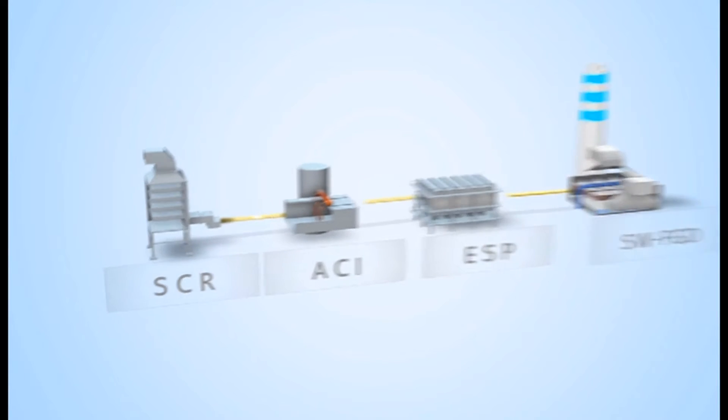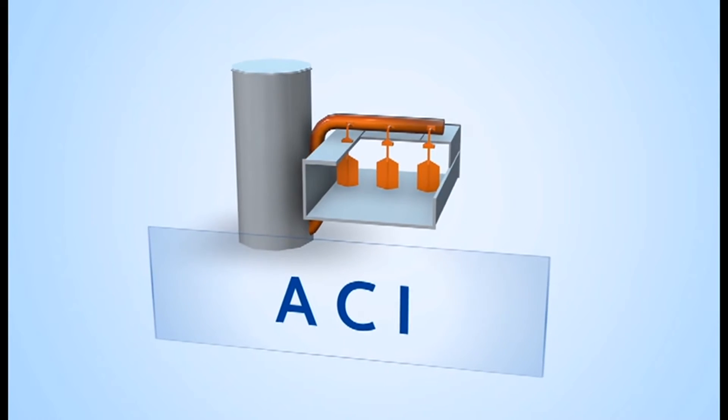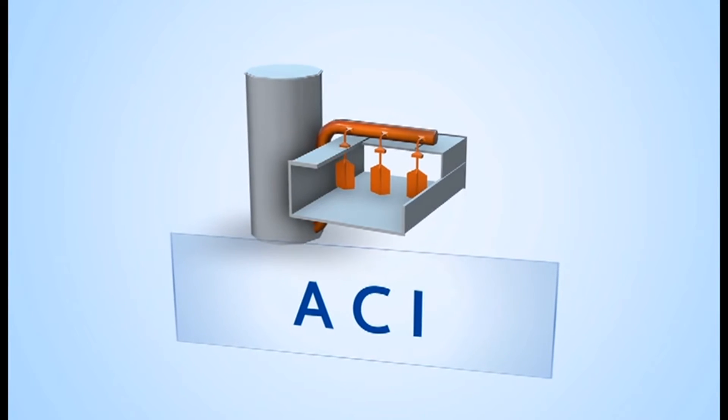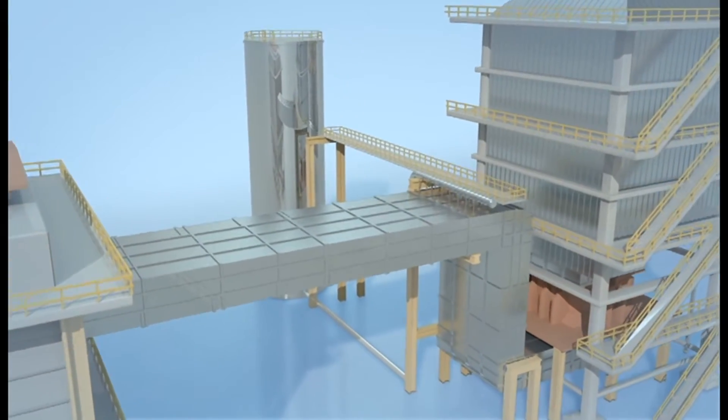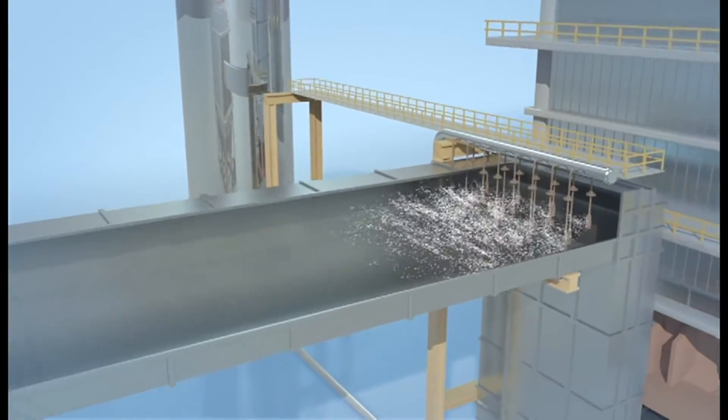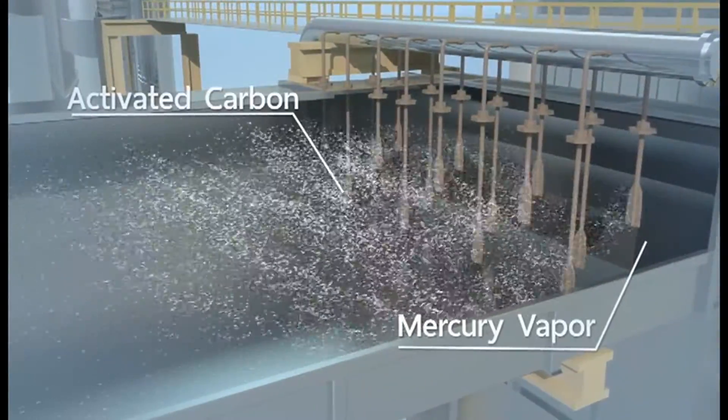The next step is the mercury vapor collection that helps remove mercury at least 90% by using activated carbon injection technology or ACI. That injects the carbon to absorb the existing mercury vapor.